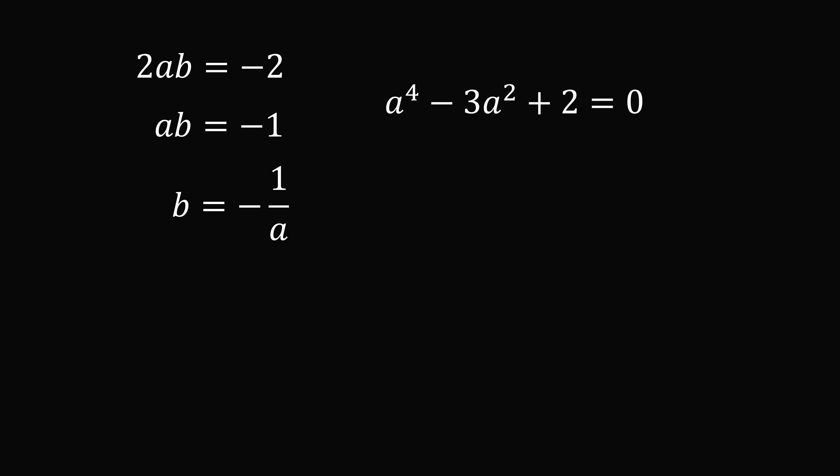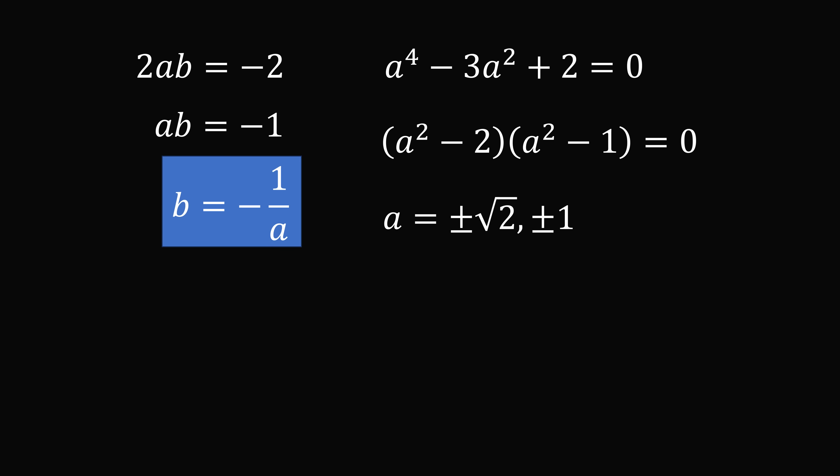We can simplify this equation because it is a quadratic in a squared. So this factors into a squared minus 2 multiplied by a squared minus 1. This is equal to 0. We get a is equal to plus or minus square root of 2, or a is equal to plus or minus 1. We now substitute that into b is equal to minus 1 over a.